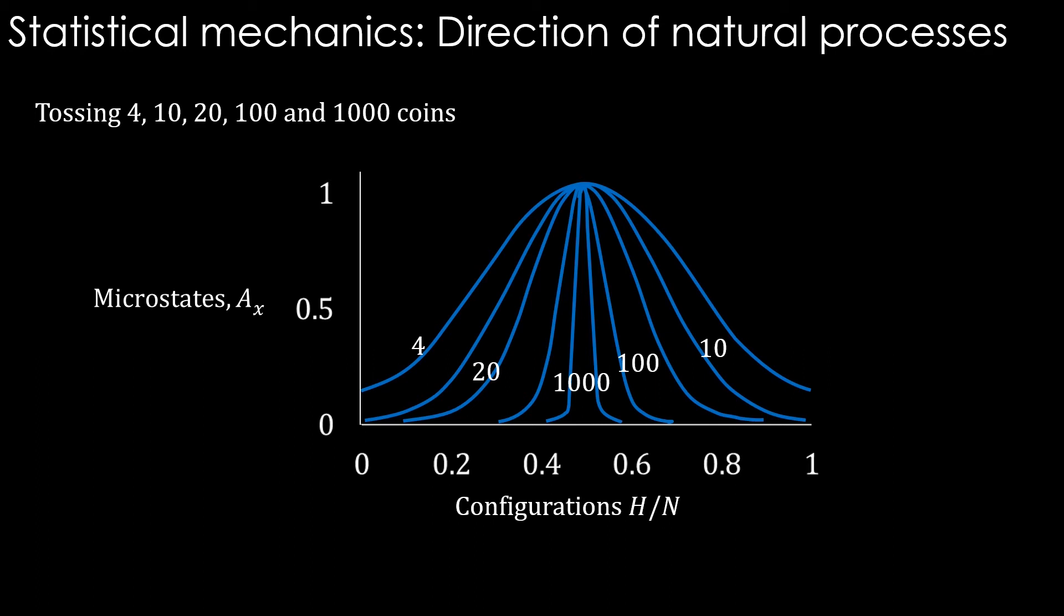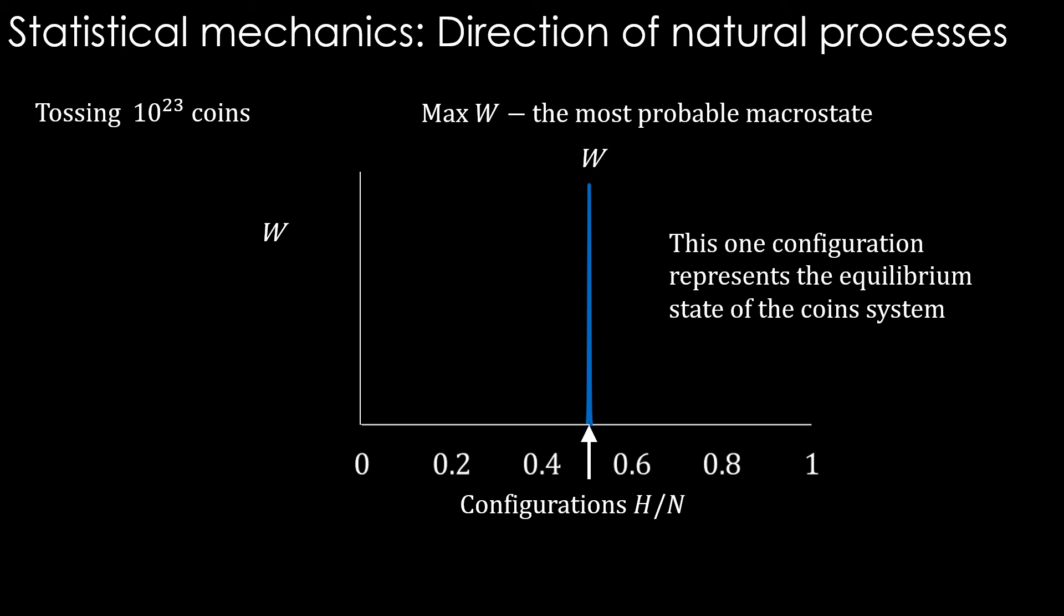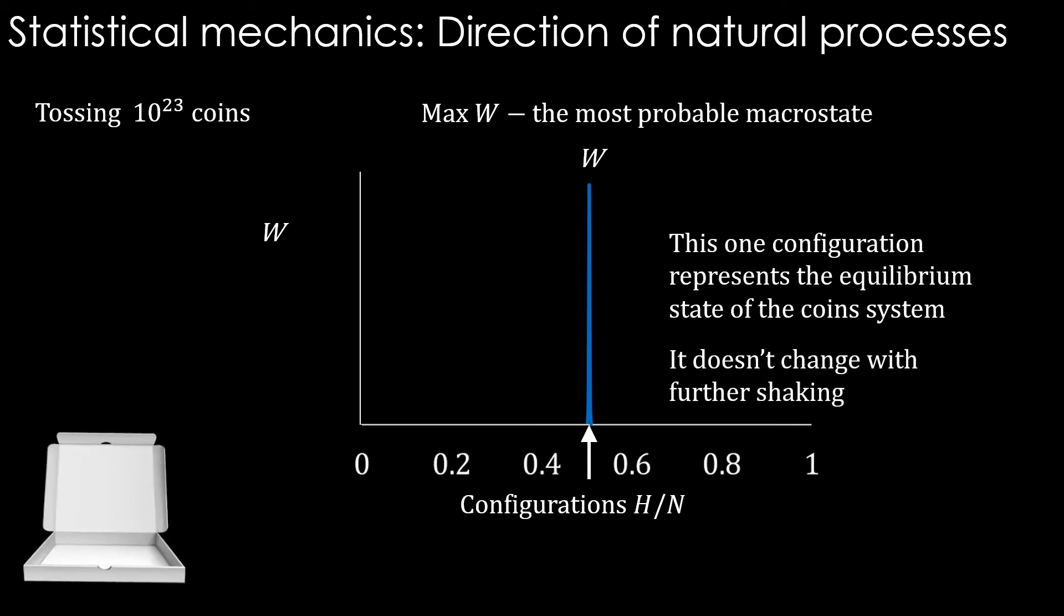What if we consider 10 power 23 coins, about 1 mole of coins? We will have an extremely sharp curve at the middle as if all other configurations are virtually impossible. The state with maximum W is the most probable state. It is so immensely probable that it seems to be the only possible configuration. This one configuration represents the equilibrium state of the coin system, meaning it doesn't change with further shaking.